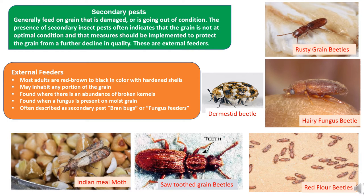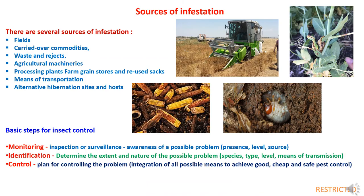Some examples of secondary pests are Indian meal moth, Sawtooth grain beetles, Rusty grain beetles, Hairy fungus beetle, Red flour beetles, and Dermestid beetle. Now, regarding sources of infestation — there are various sources because of which stored grain pests multiply in storage sites and cause damage to stored material.